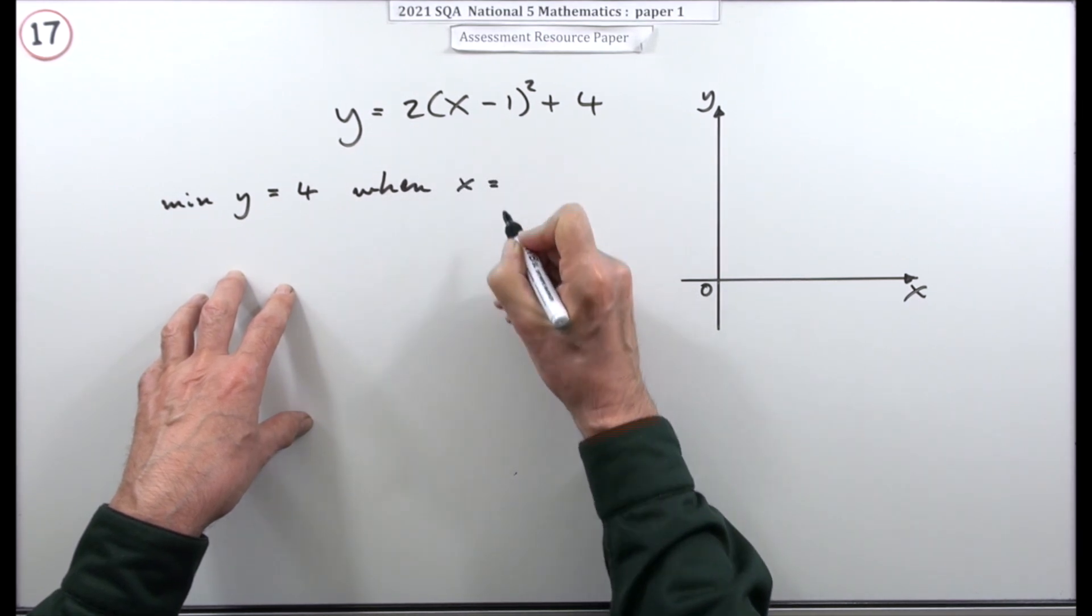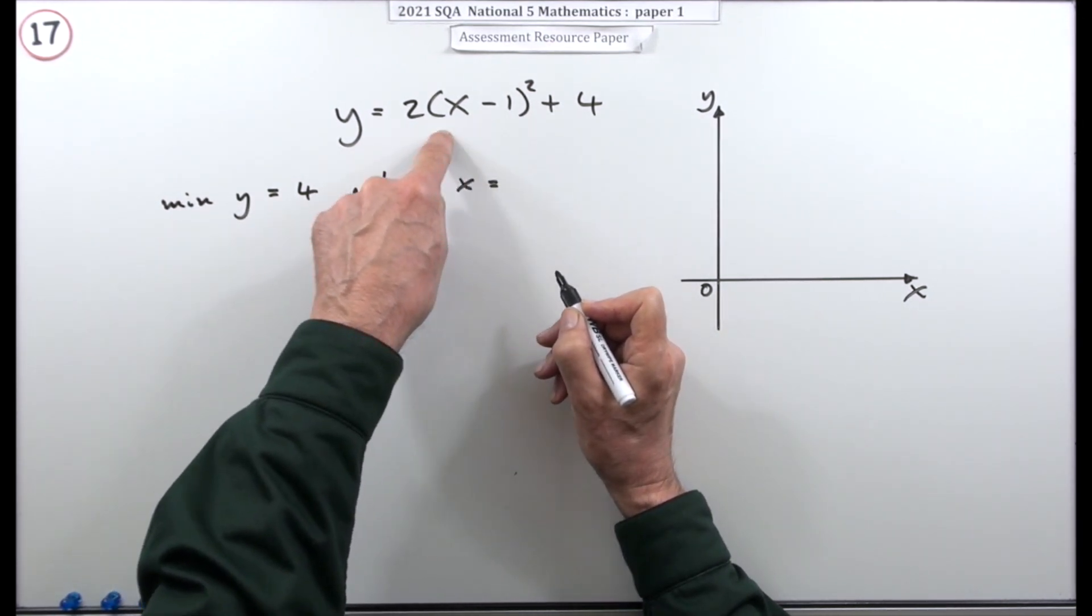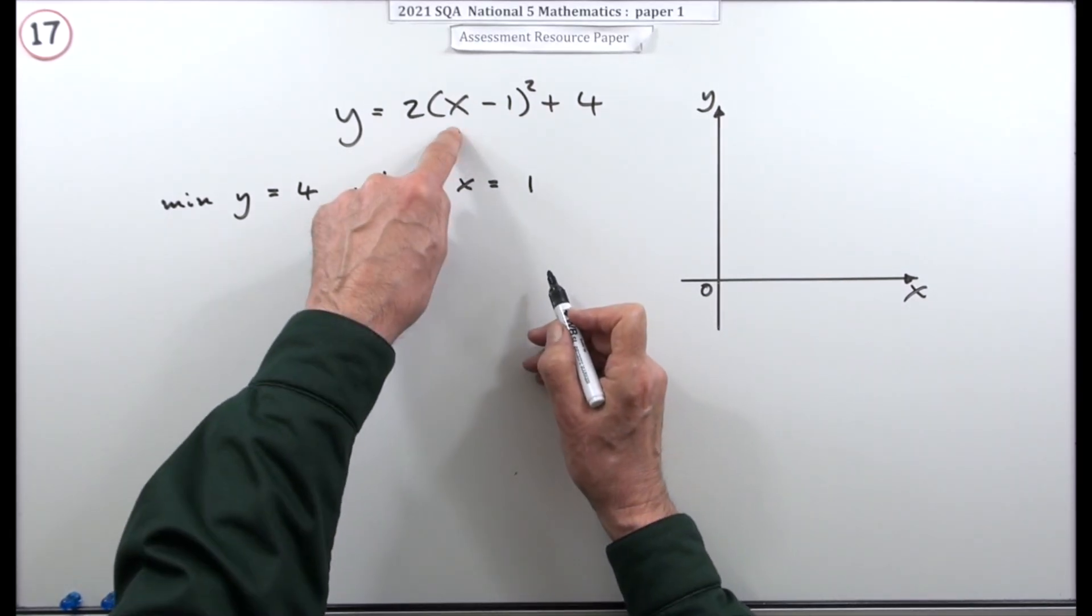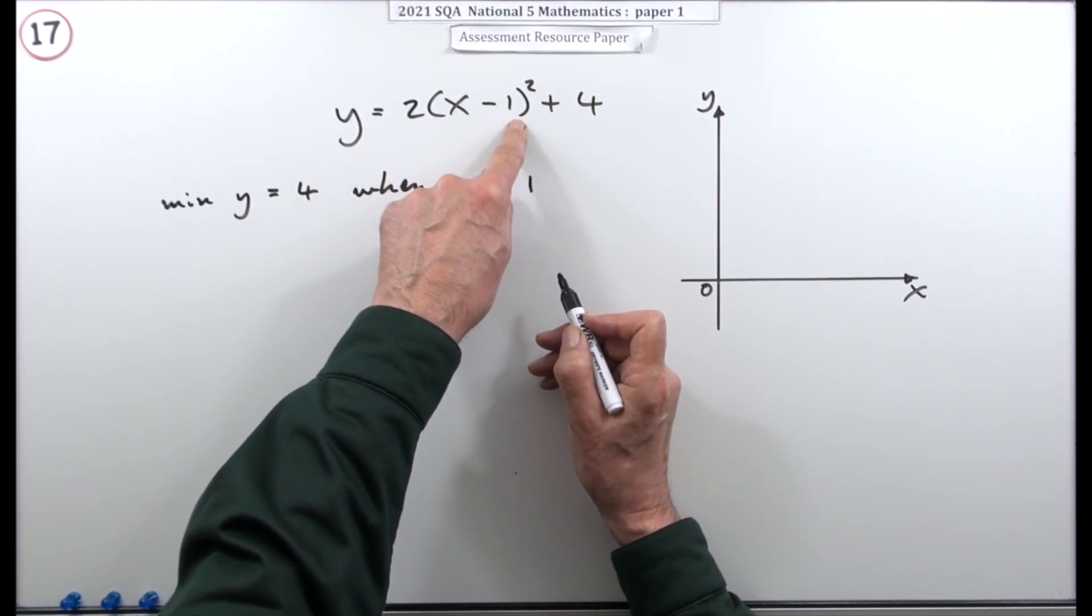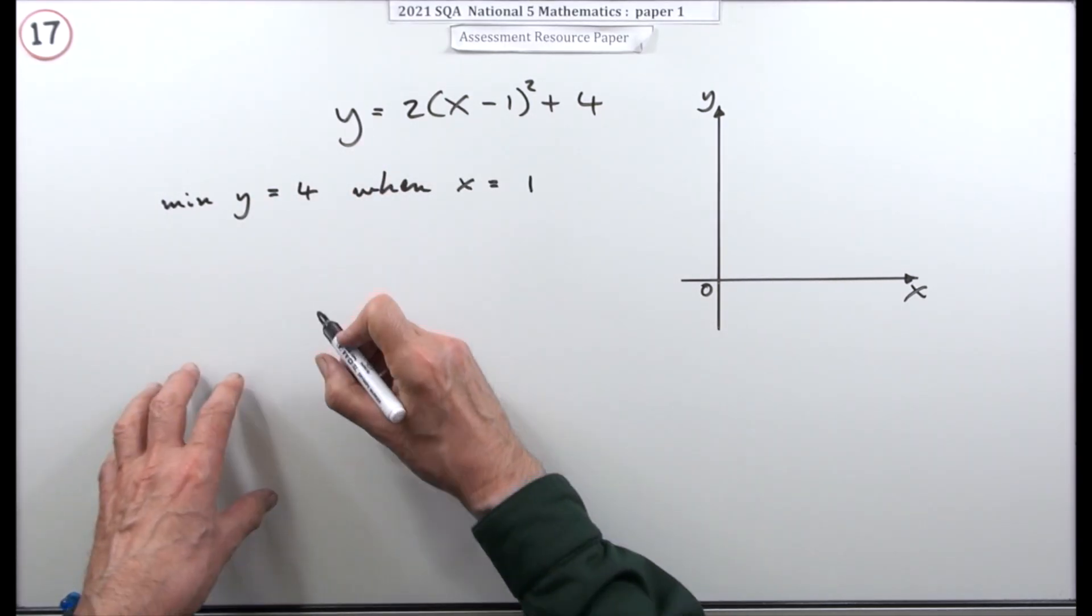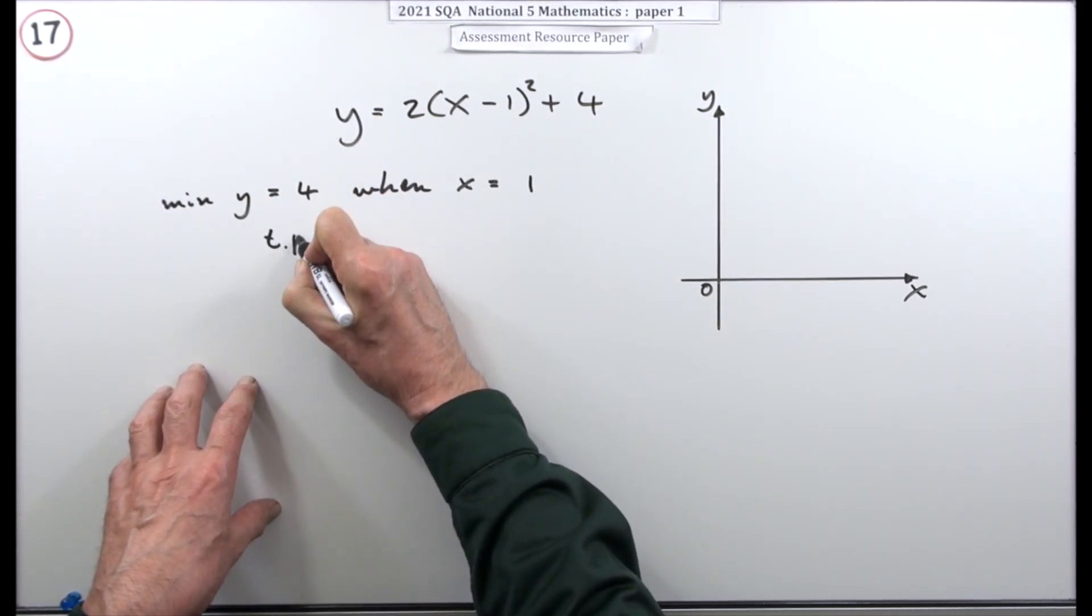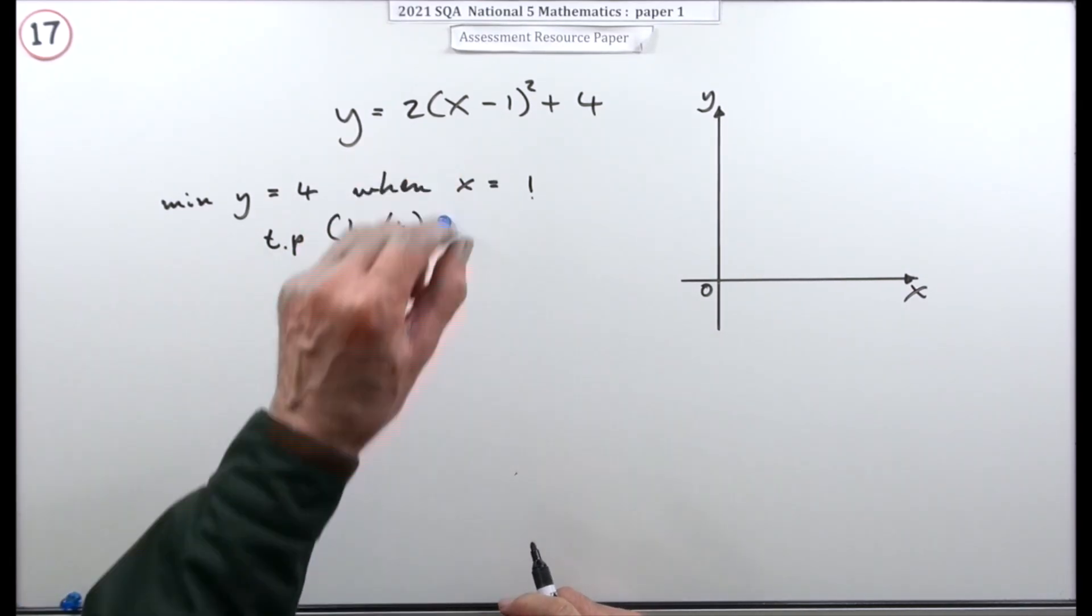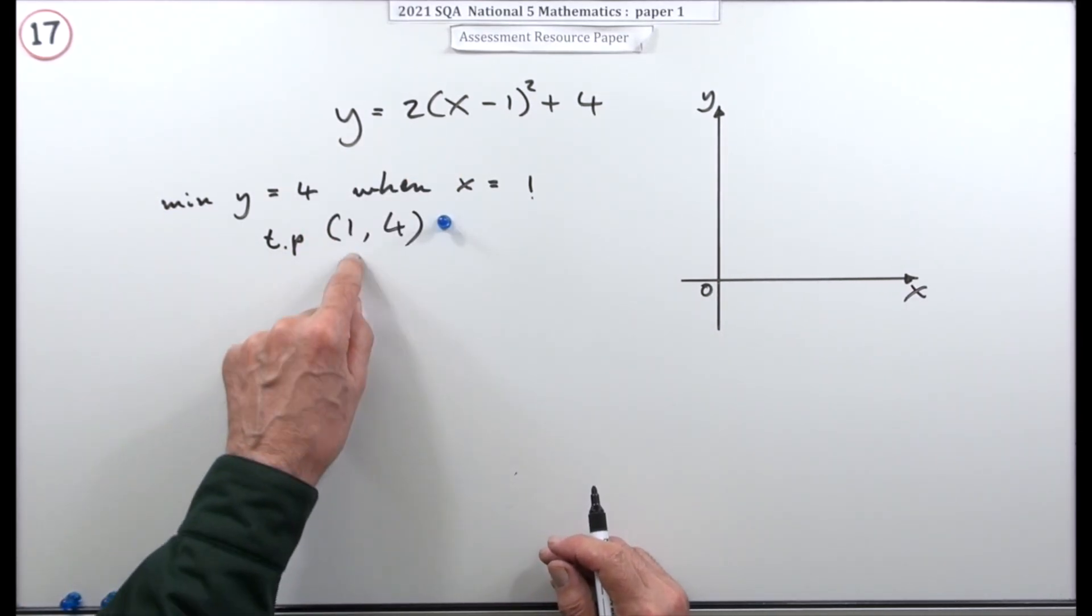When x equals whatever it takes to make the bracket 0. That would be a 1. When x is 1. When x is 1 the bracket comes to 0. So y will be 0 and 4 which is 4. Now just knowing that. Knowing that you've got that turning point at 1, 4. Didn't necessarily need to show any working. It's the first mark.